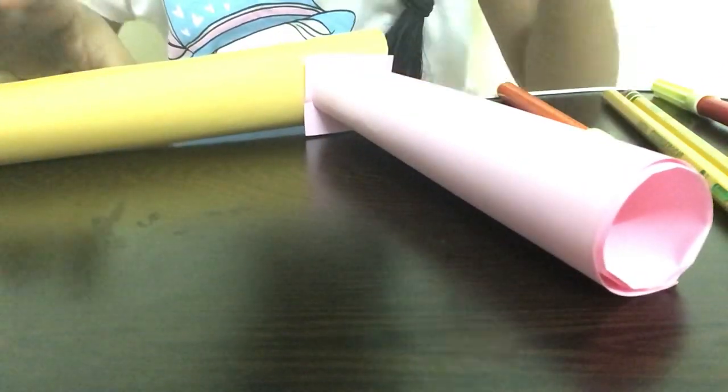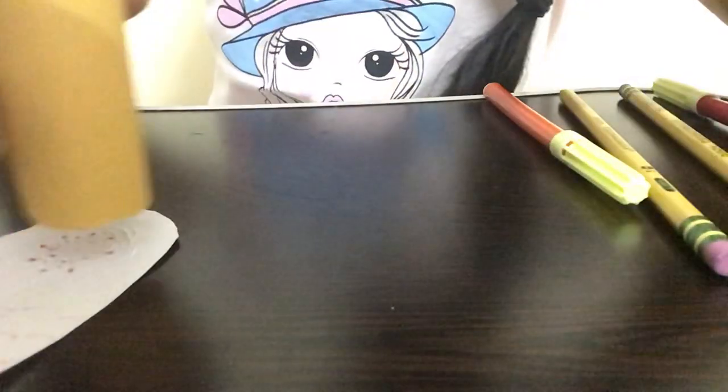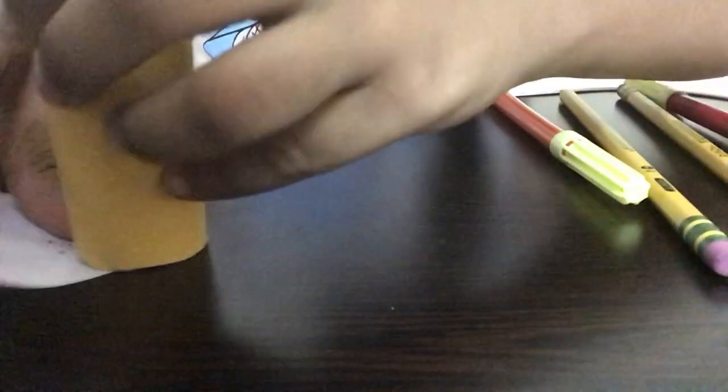After we complete this, I'm taking the hand that we already made. I'm applying some glue on the back part of it and sticking it to the front like this. I'm applying some glue on the bottom part of the hand and sticking it to this part. We have to stick it carefully so it doesn't come out.